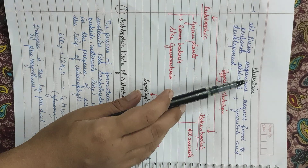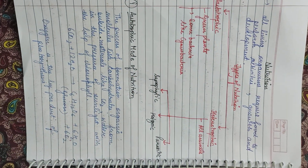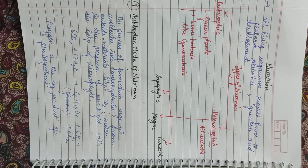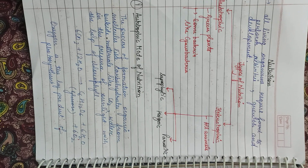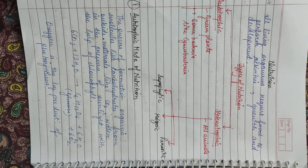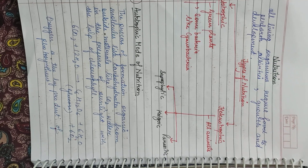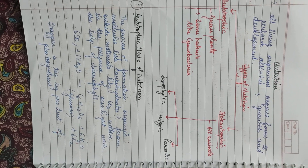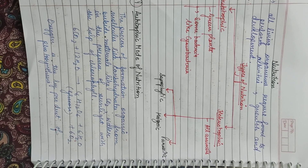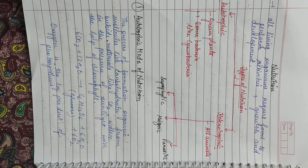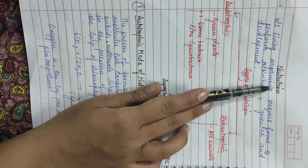Now, first is nutrition. All living organisms require food to perform different activities, growth, and development. You are always told to take calcium-rich food like milk, because it is necessary for the growth of your bones, or to eat good amounts of green leafy vegetables so that your body can fight diseases and grow well. All these processes come under nutrition.